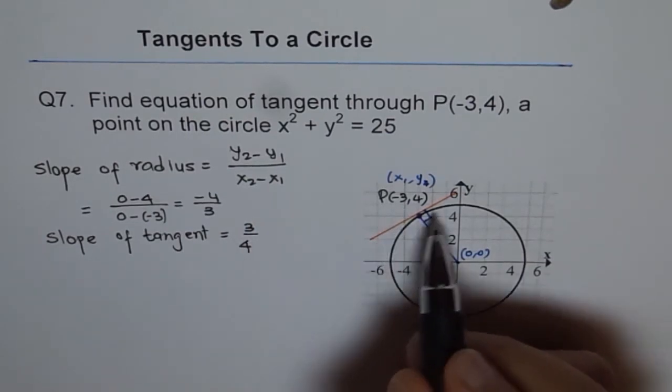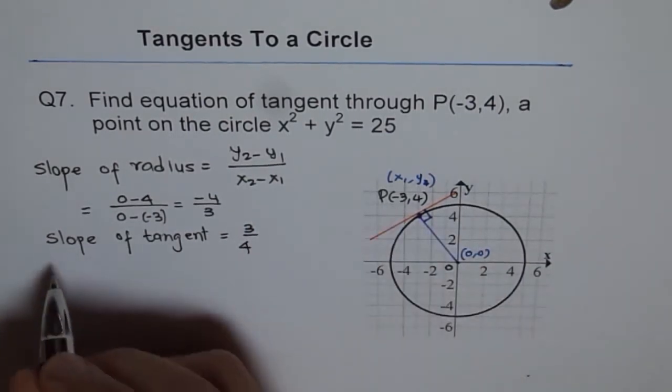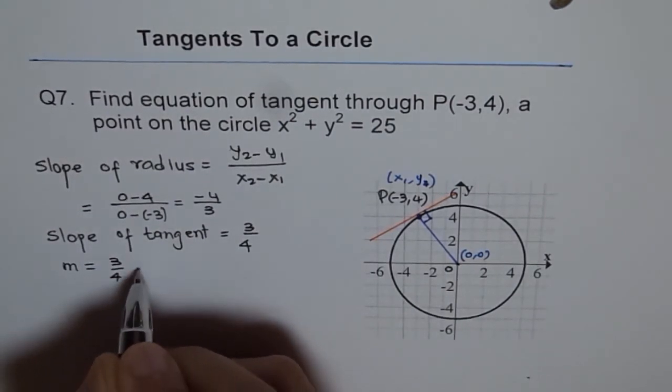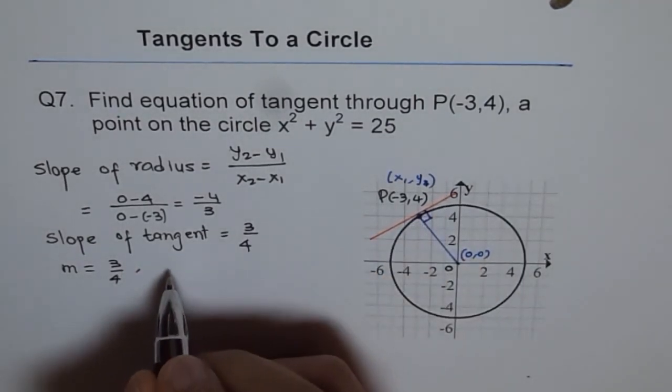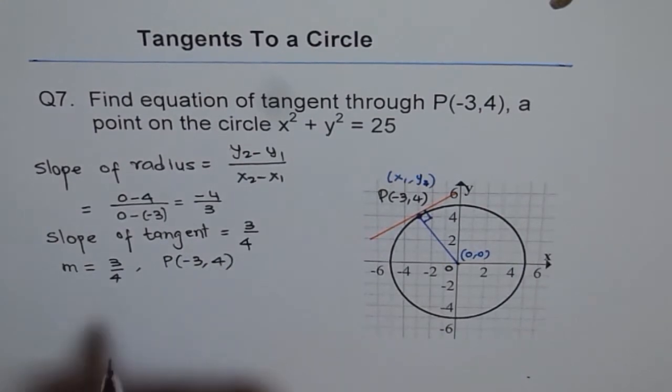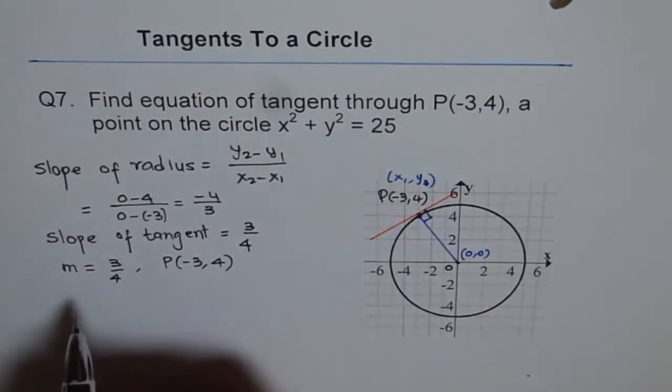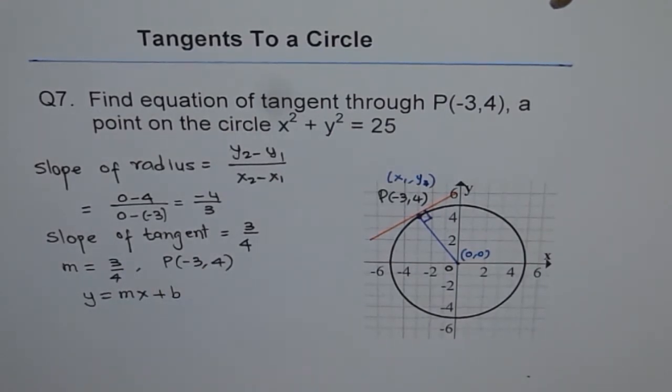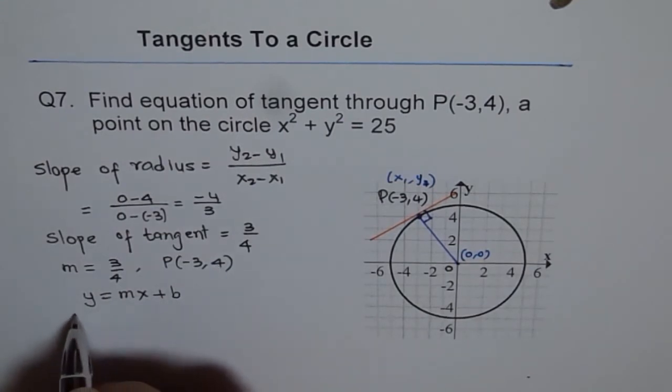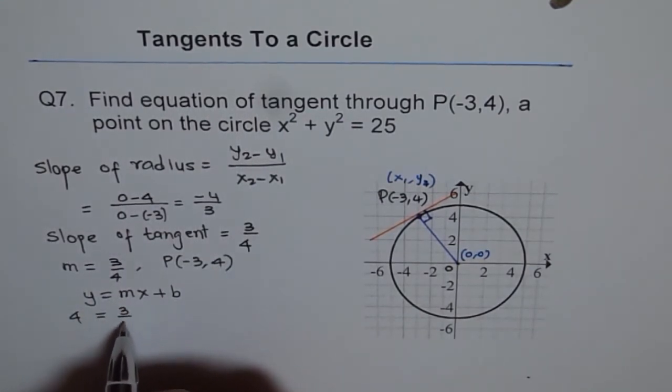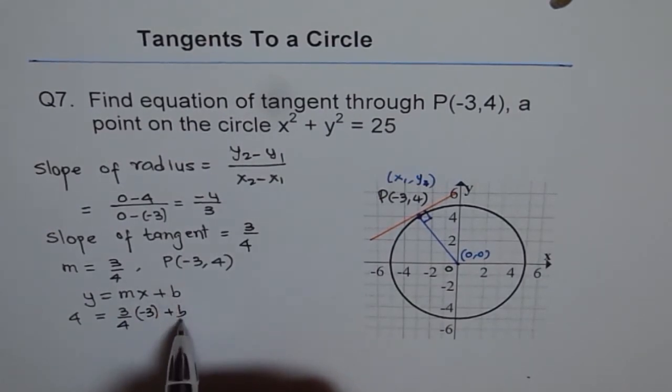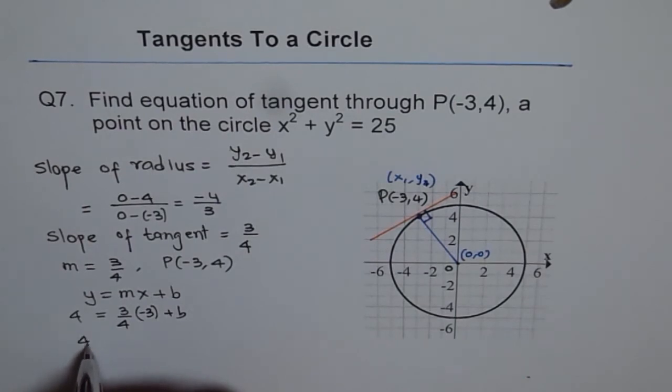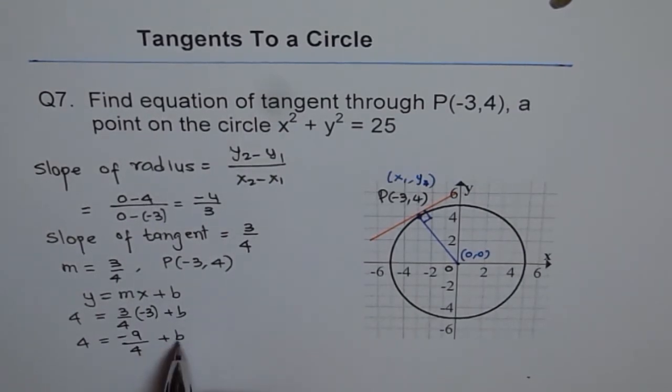Now we get the slope of the tangent line. Now we know the slope of the line and we also know the point. So our slope m equals 3/4 for the tangent and the point through which tangent is passing is point P, which is (-3, 4). So knowing slope and a point, we can always find tangent and let's use slope intercept form, which is y = mx + b to find the equation of this line. Now the y value here is 4, so let me write 4 equals to slope m is 3/4 and x value is -3 and b is a variable which we need to find. So that gives us 4 equals to -9/4 plus b. Now from here we can find b.